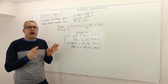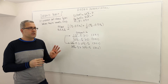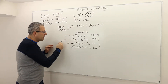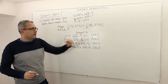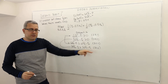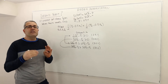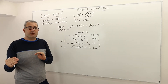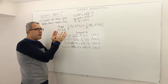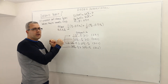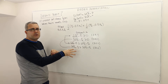So buying package 1 is the optimal strategy for type 1. Similarly, the individual rationality constraint of type 2 and incentive compatibility constraint of type 2 ensure that buying package 2 is the optimal strategy for type 2.